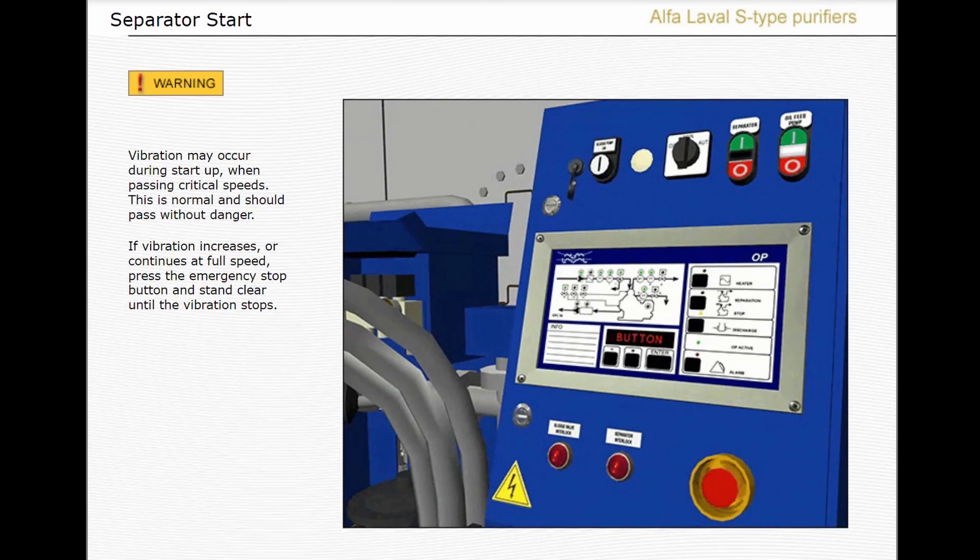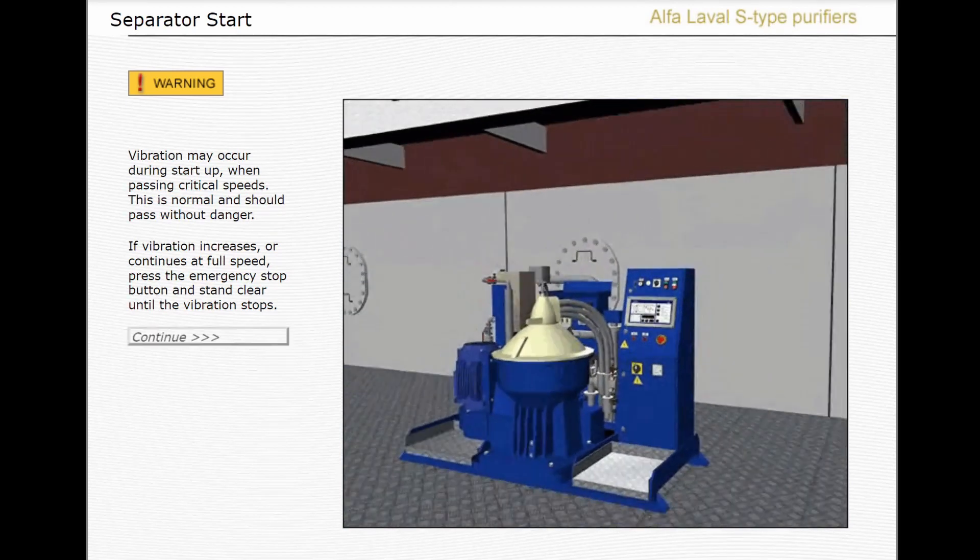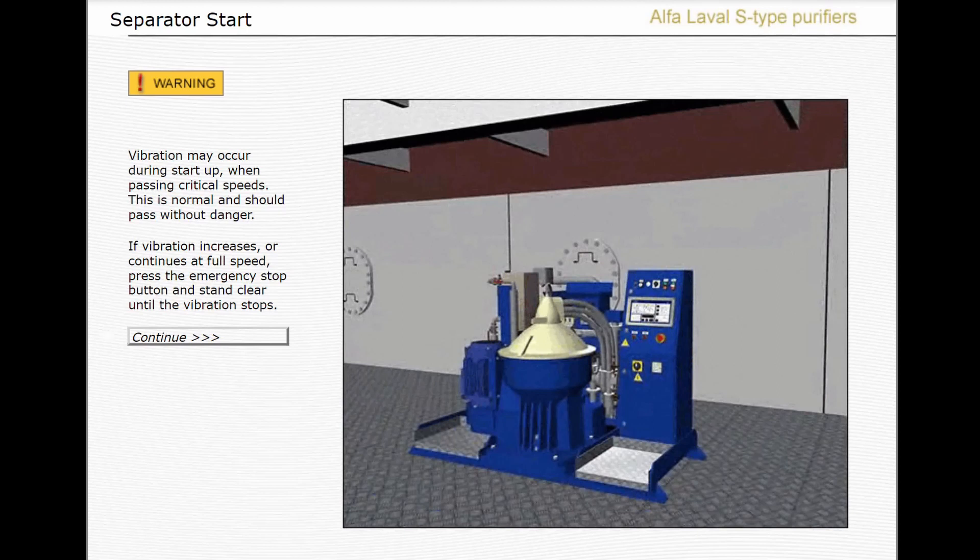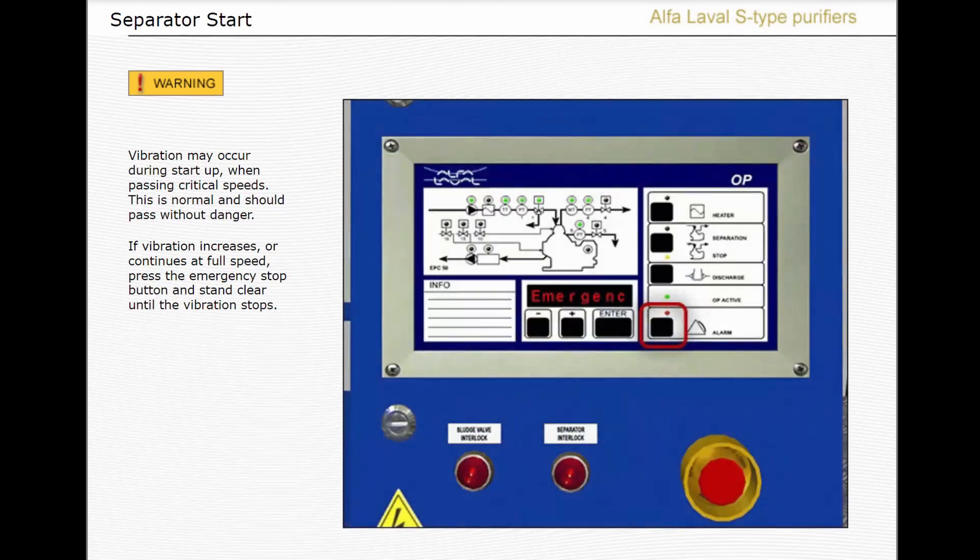The separator, feed pump, and heater are stopped when the emergency stop button is pushed. Once the zero speed signal has been received, the alarm reset button can be pushed. The message 'switch power on off' will be displayed. This refers to the EPC power inside the control cabinet. The cause of vibration must be determined and corrected before starting again.